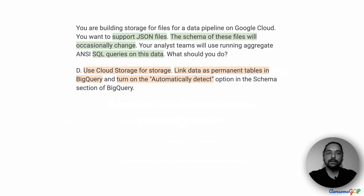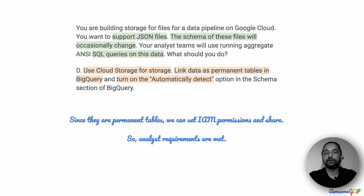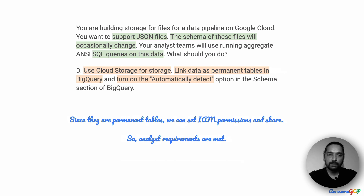How about option D? Option D suggests we use Cloud Storage for storing the files, which is possible — Cloud Storage can easily store JSON files. It also suggests turning on auto-detect, which we already saw is a workable option. The third part is to link the data as permanent tables in BigQuery. Since these are permanent and not temporary, we have the option of sharing them with other users using IAM permissions. They come in as a regular BigQuery table except linked to Cloud Storage, so analysts will be able to run queries on this linked permanent table. That requirement is met.